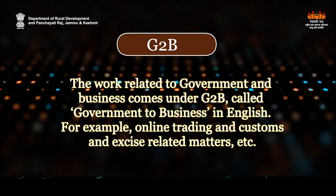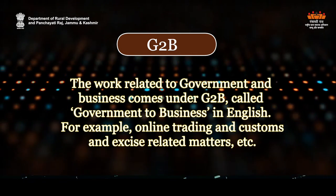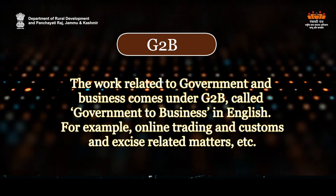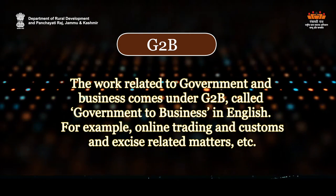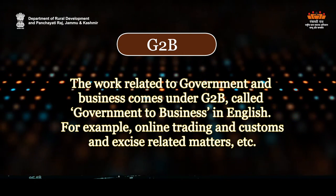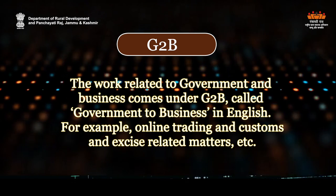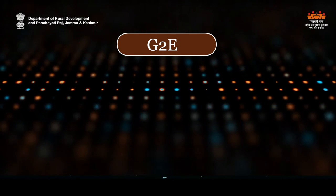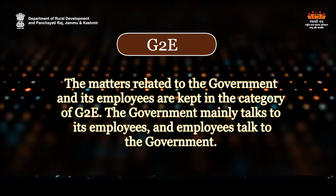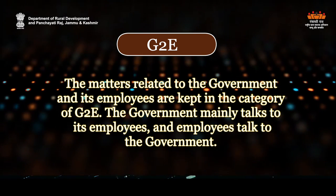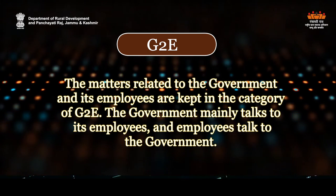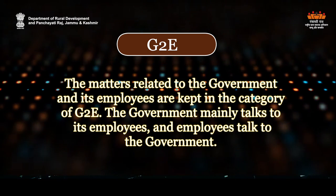G2B: The work related to government and business comes under G2B, called government to business in English. For example, online trading and customs and excise related matters. G2E: The matters related to government and its employees are kept in the category of G2E, where the government communicates with its employees and employees communicate with the government.